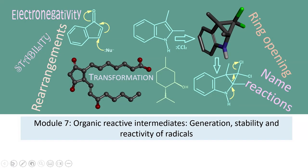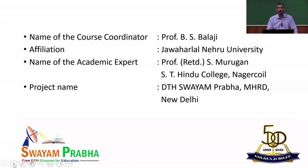A logical and systematic approach to solving organic chemistry problems for CSIR-NET. Module 7: Organic Chemistry — Organic Reactive Intermediates: Generation, Stability and Reactivity of Radicals. I am Professor Balaji, currently working at Jawaharlal Nehru University. This project is sponsored by DTH Swayamprabha, MHRD, New Delhi.